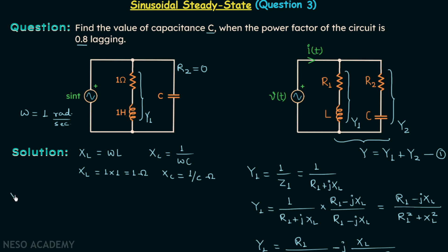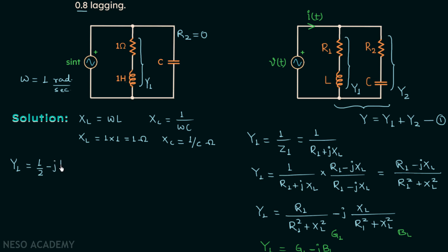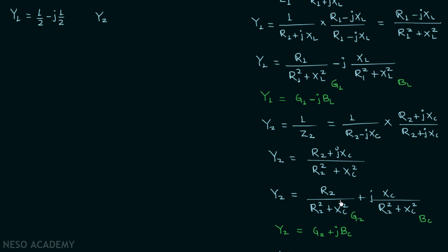Now we find the admittance Y1 for the first branch. Using the result Y1 = R1/(R1² + XL²) - j·XL/(R1² + XL²), with R1 = 1 and XL = 1, Y1 = 1/2 - j/2. Next, for Y2, we use Y2 = R2/(R2² + XC²) + j·XC/(R2² + XC²).